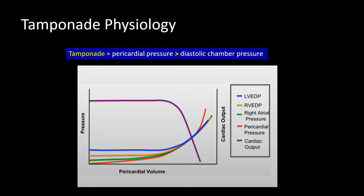Notice I said tamponade physiology — that's because the patient might not be hypotensive yet, and hypotension is required for the clinical diagnosis of cardiac tamponade. Our goal with POCUS is to find tamponade physiology before hypotension and true tamponade occur. As shown in this graph, a patient can sustain normal cardiac output for quite some time as pericardial volume and pressures increase, but at some point the cardiac output will rapidly drop off. We want to identify tamponade physiology early, rather than waiting until decreased cardiac output has occurred.